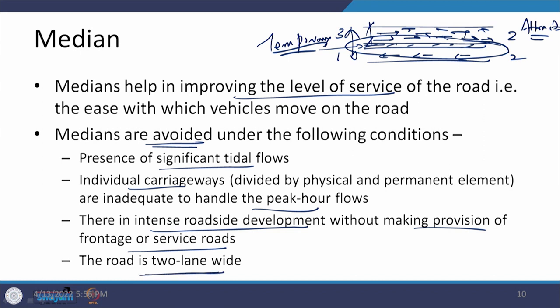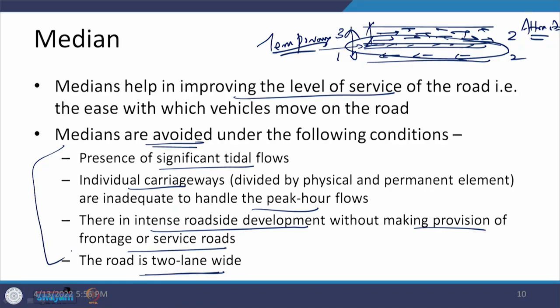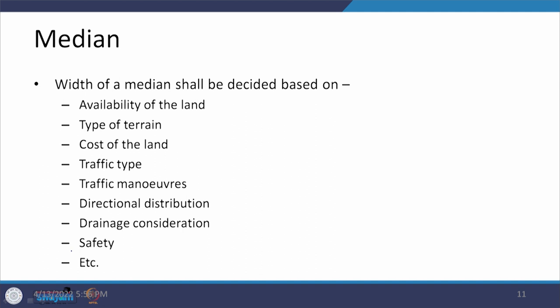Another case where medians should be avoided is where there is intense roadside development without provision of a frontage or service road. If a service road or frontage road has not been provided and a median has been provided, the resulting traffic in one direction causes problems. Also, if a road is only two lanes wide, medians should be avoided. These are the cases in which medians should not be provided.